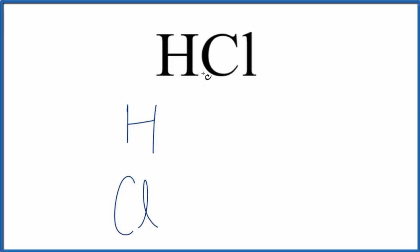And although it's not written, we assume there's a subscript of one if there's nothing written after the element. So because of that, we'll have one hydrogen atom and one chlorine atom in the HCl molecule.